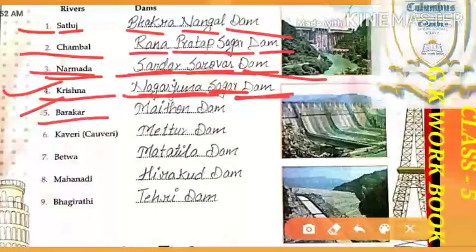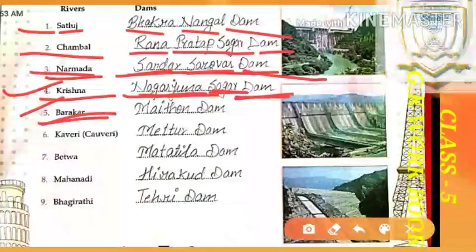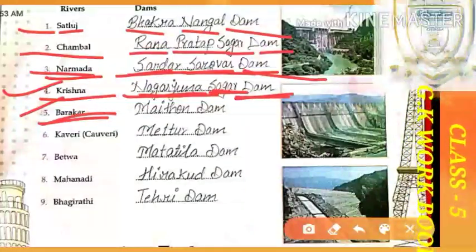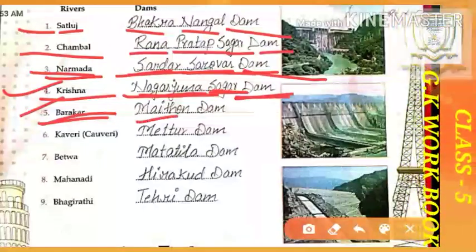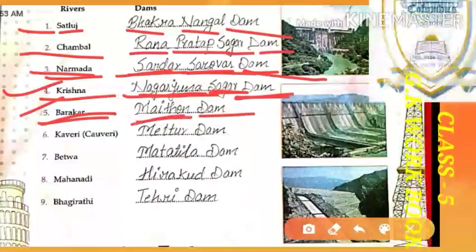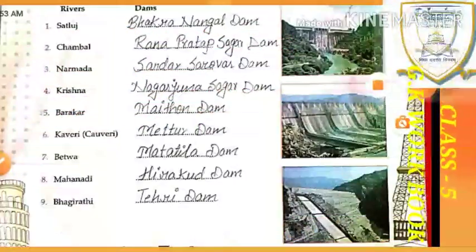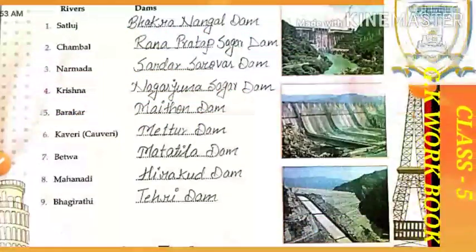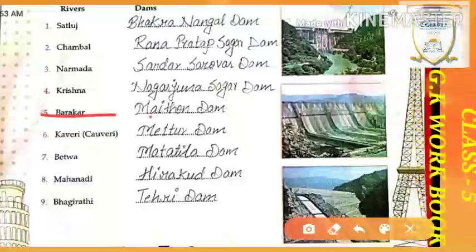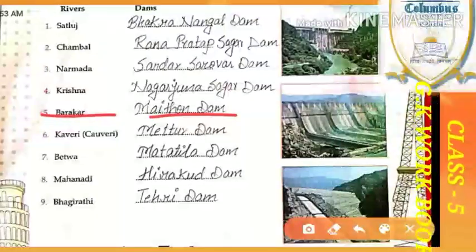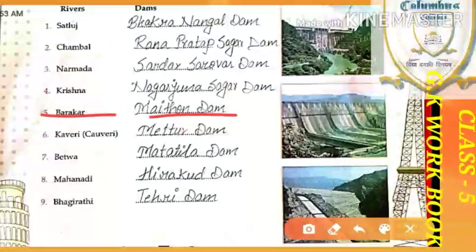Next river is Barakar, and the dam of this river is called Maithon Dam. Maithon Dam. Let's see the spelling for everyone: M-A-I-T-H-O-N — Maithon. And also the spelling of Nagarjun — let's see that clearly for everyone.